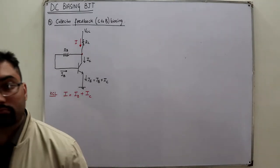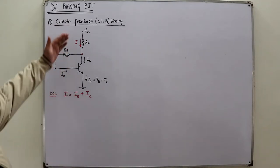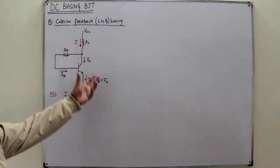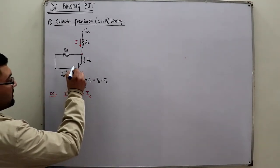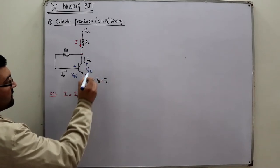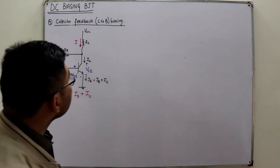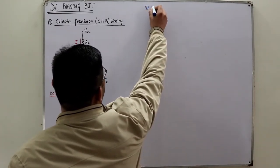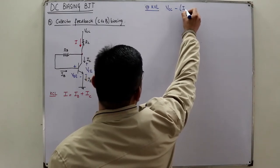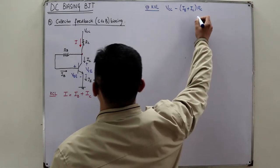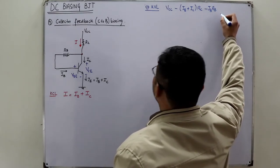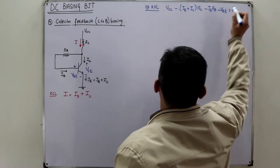Now we apply the standard steps: first, find IB through KVL in the input loop; then find IC = β·IB; then find VCE through the output loop. In the circuit, VBE is encountered on the input side and VCE on the output side. The input KVL equation is: VCC minus (IB + IC)·RC minus IB·RB minus VBE = 0.